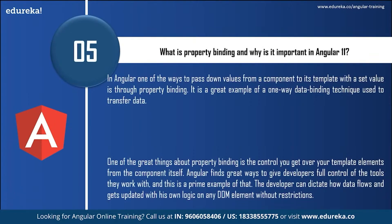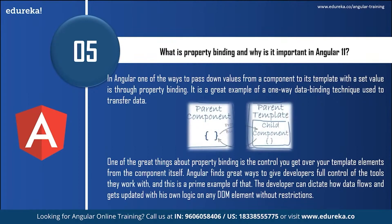Next: what is property binding and why is it important in Angular 11? In Angular, one of the ways to pass down values from a component to its template is through property binding. It is a great example of a one-way data binding technique used to transfer data. Property binding gives you control over your template elements from the component itself. The developer can dictate how data flows and gets updated with their own logic on any DOM element without restrictions.